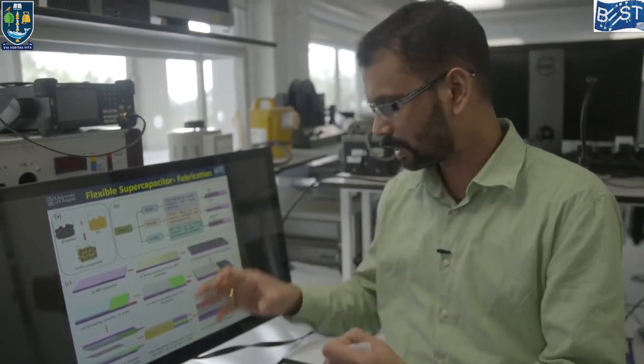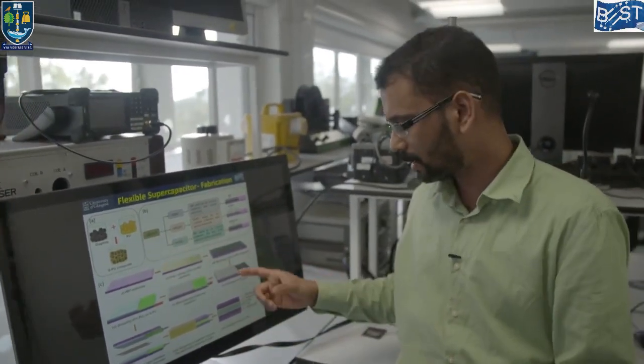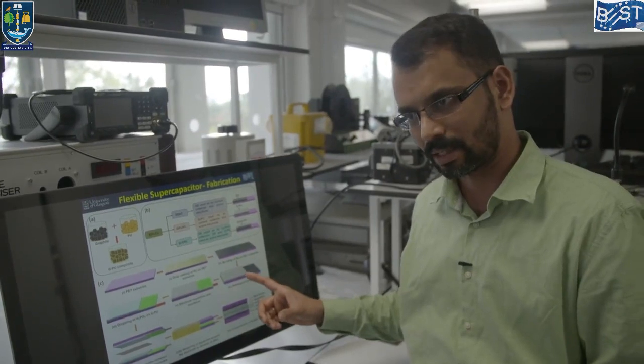So, you can see here we have a current collector graphene sheet. And then, on the top of the current collector, we need an active electrode. What we did is that we synthesized our new material. It is based on a graphite polyurethane composite, and that composite we printed on the top of the current collector.